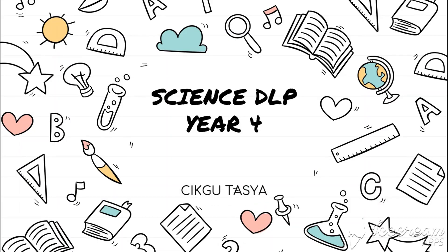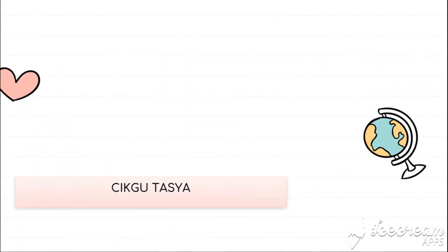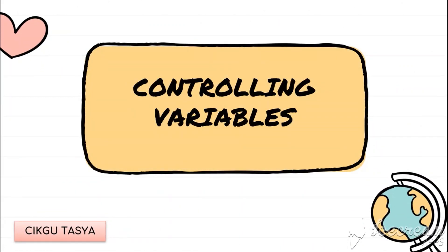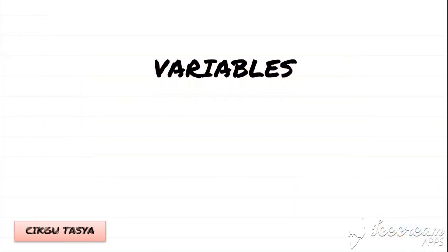Hello students, I am Chia Guh Tasha here, so you are back again with me with one more video of Science DLP Year 4. So what we will be looking at today is Controlling Variables, and this one falls under Science Process Skills 2. We have been going through all of these science process skills for the past 2-3 weeks, so today we will be looking at Controlling Variables.